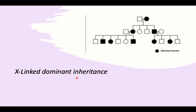X-linked dominant inheritance means either males or females can be affected — it is dominant, with a vertical rather than horizontal inheritance pattern. Both females and males are affected when the disease is not lethal. For example, X-linked hypophosphatemia is also X-linked dominant but not lethal, so it can present in both males and females. Conditions like Rett syndrome and incontinentia pigmenti, however, are lethal for males.